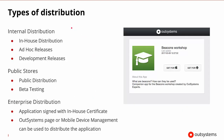There are different types of distributions. There are internal distributions where we can distribute the app in-house, ad hoc, or just as a development release. There are then the public store distributions, like the public distribution and the beta testing distribution.